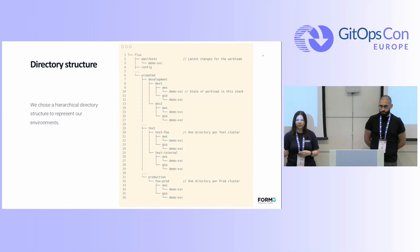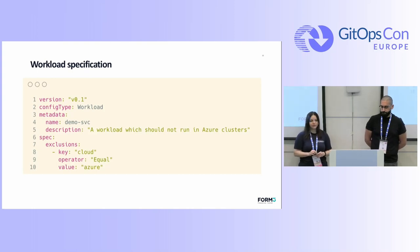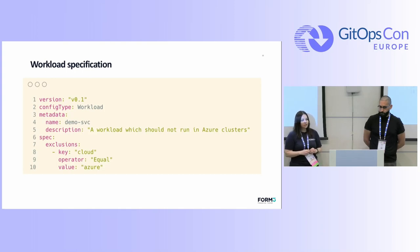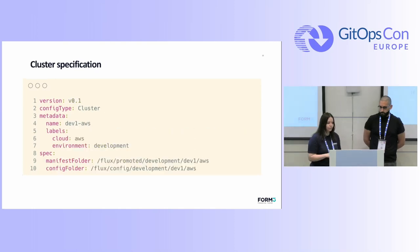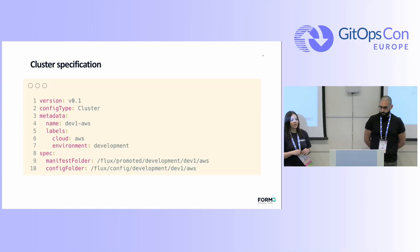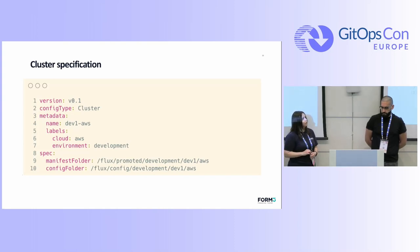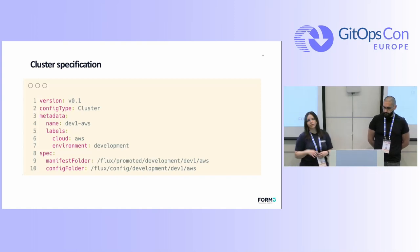Sam will show you more about the directory structure and how it works. We use YAML to specify our workloads, and another requirement was to be able to do exclusions — as you can see on lines 8 to 10, we can exclude for a particular cloud or whatever we need. The cluster specification is also done in YAML, with labels indicating which cloud and which environment it belongs to. It has two paths: the manifest folder for workload specifications, and the configuration folder containing environment-specific configuration for that particular workload.